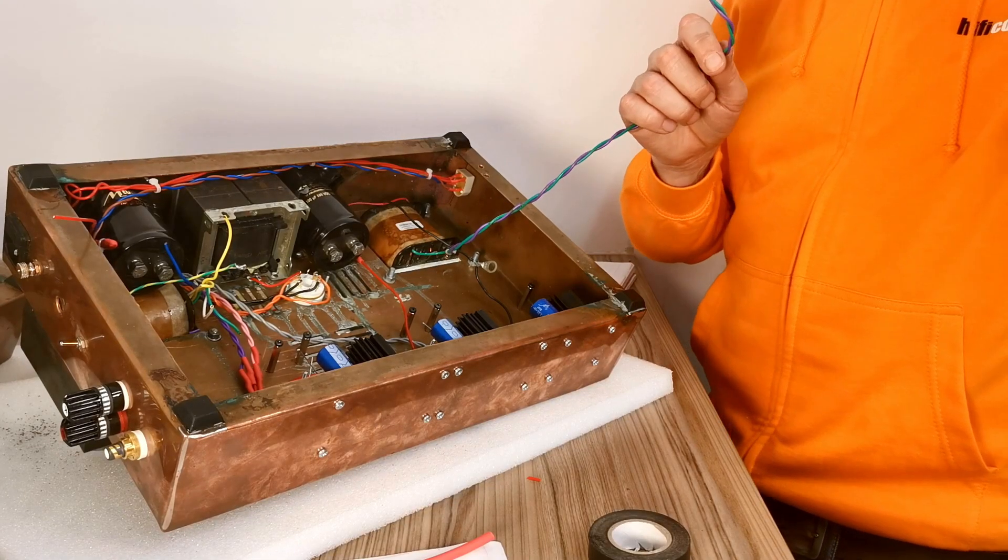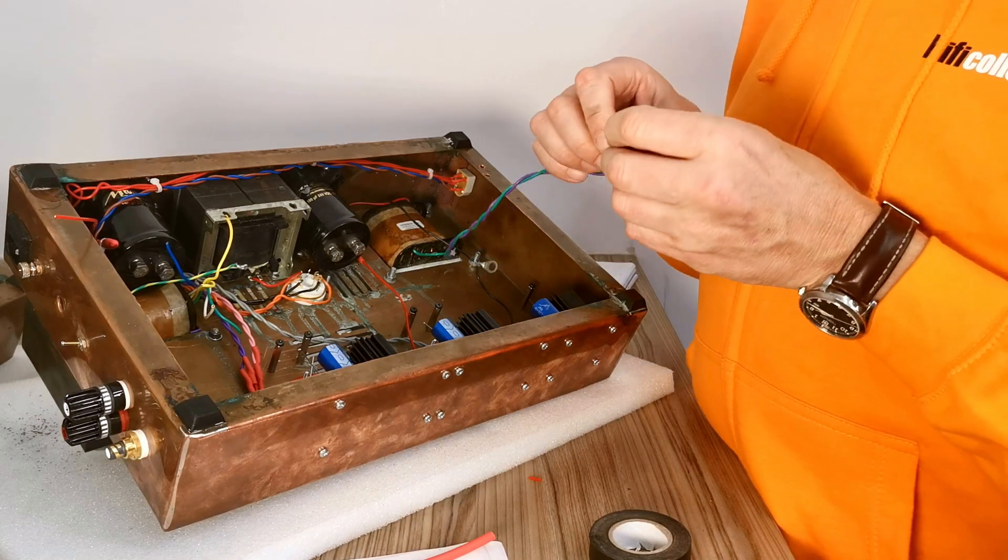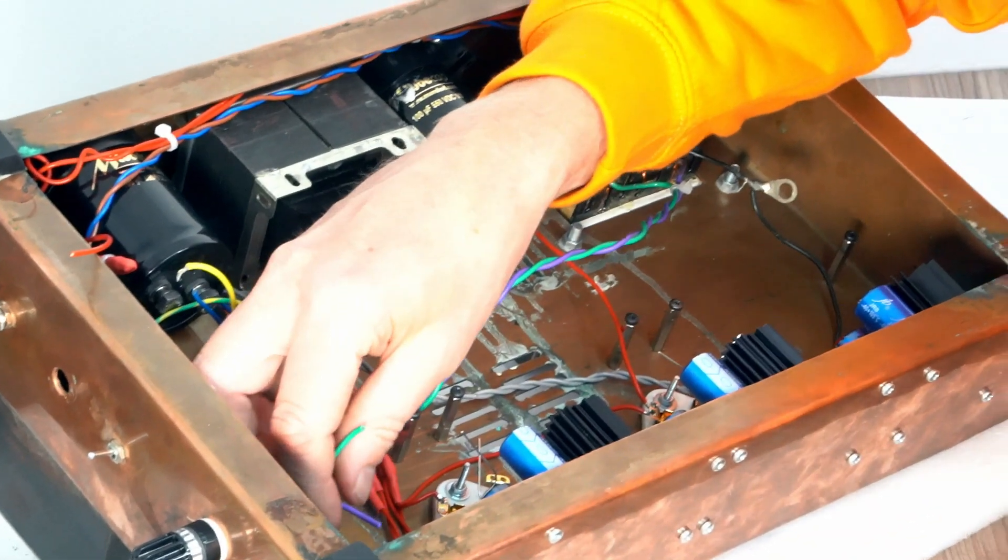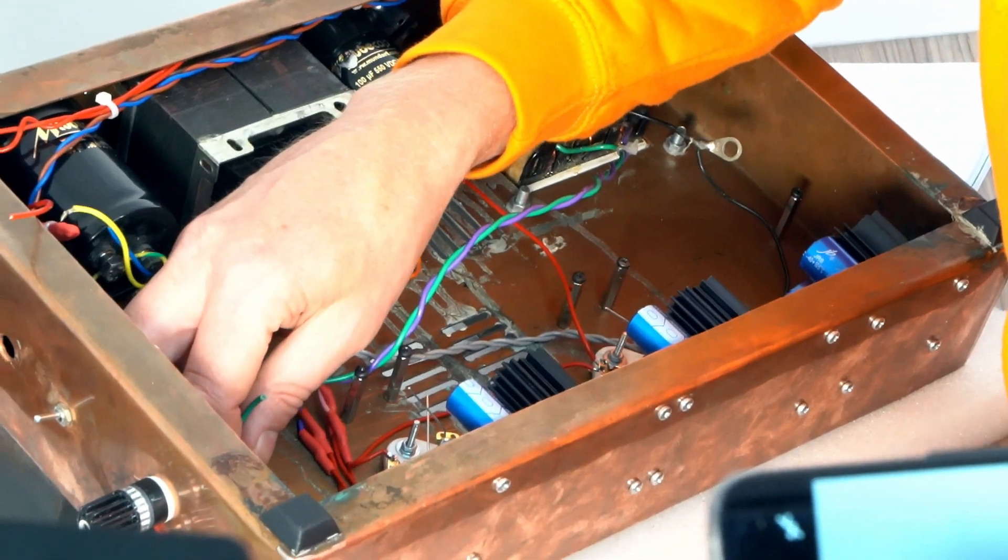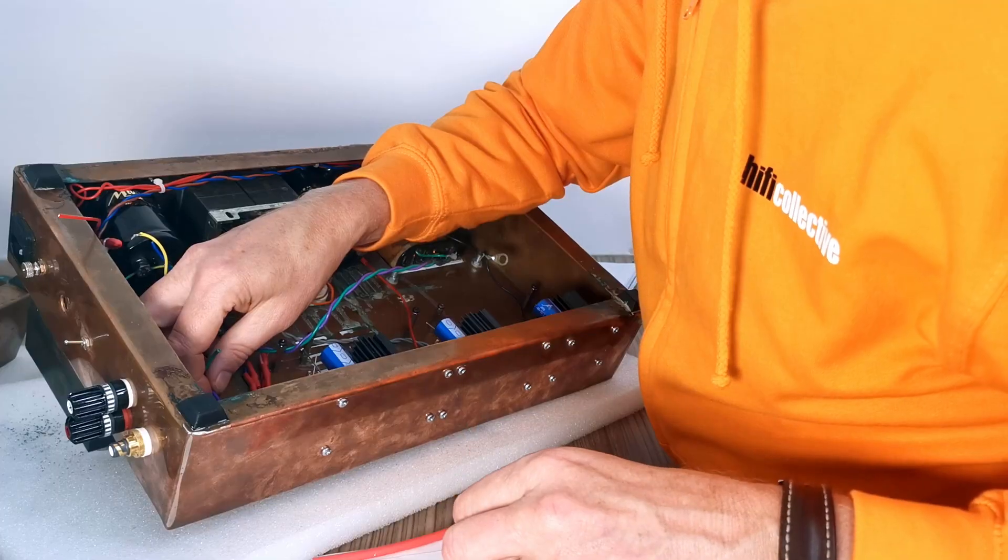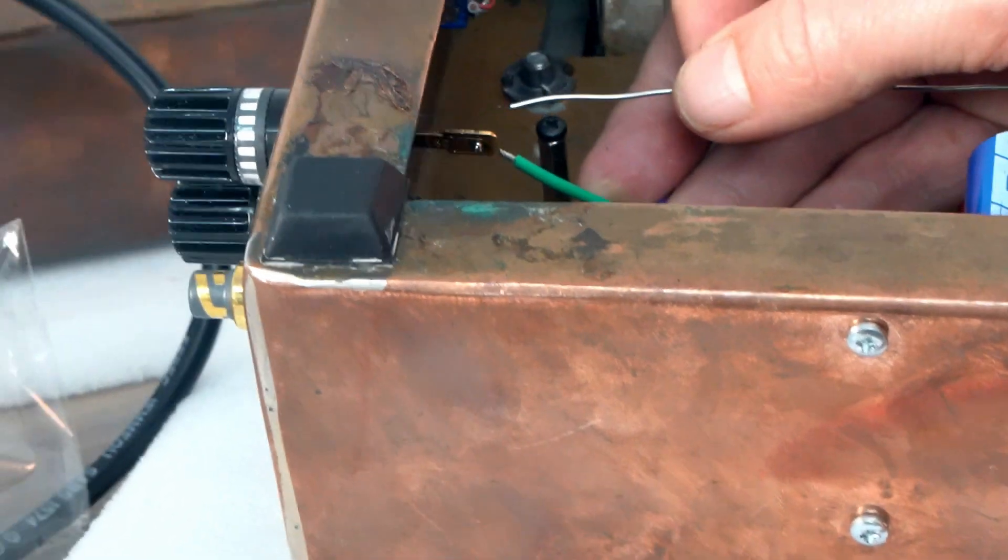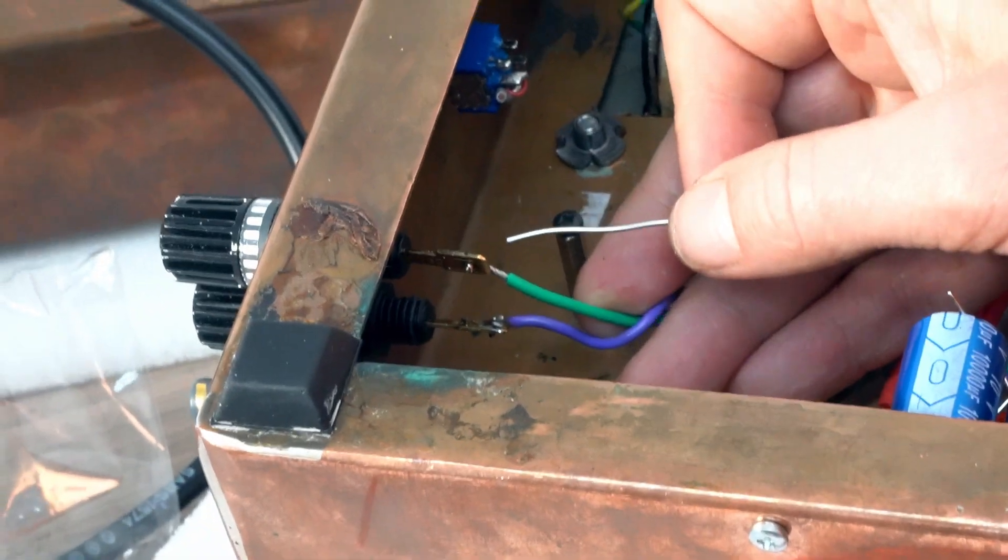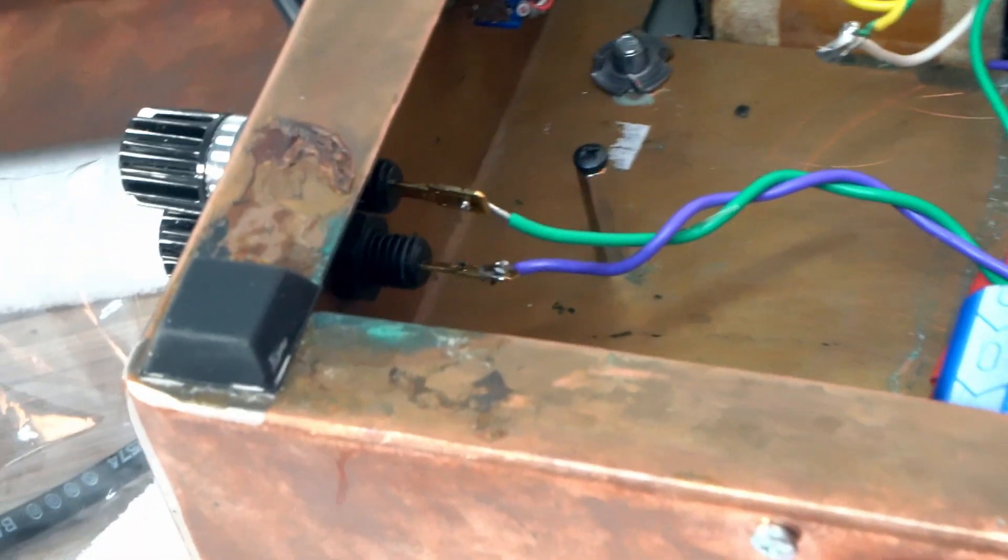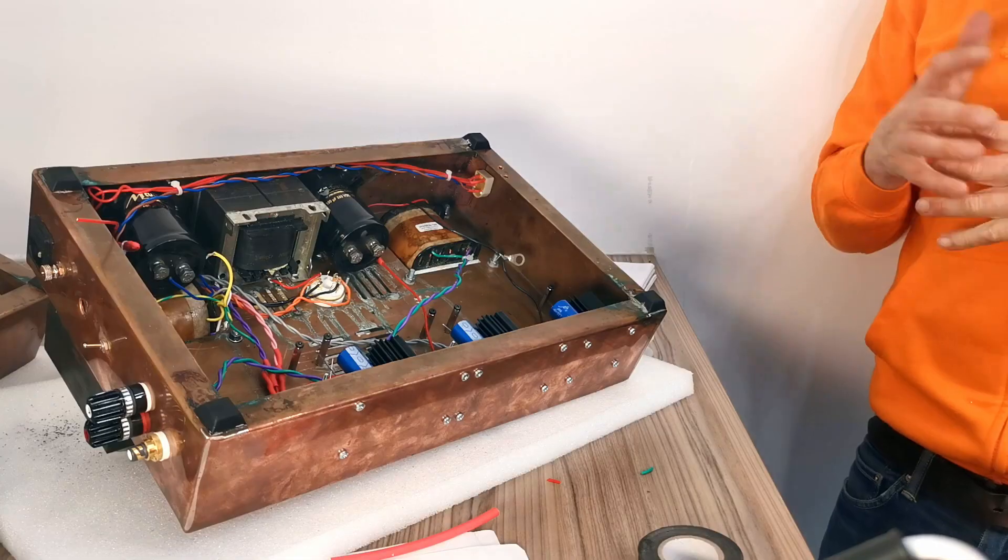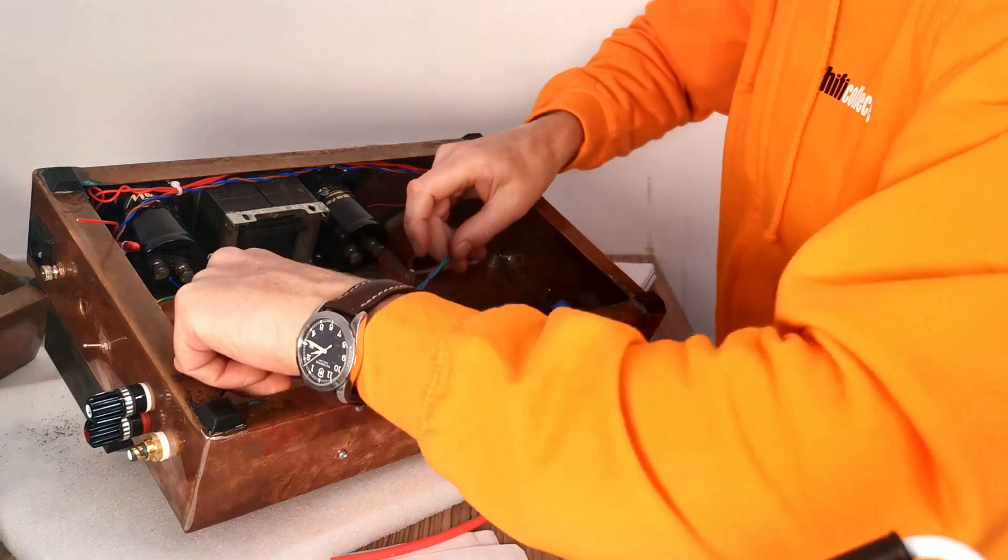So the next one is, these are the outputs, speaker outputs from the output transformer here, which I think is long enough to get to there, which is cool. So the green is obviously earth. It's always good to heat it up for a bit longer than normal and then apply the solder, because otherwise you just get solder everywhere. Anyway, so that's that done.